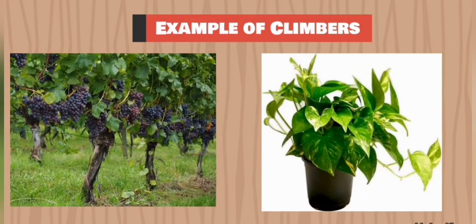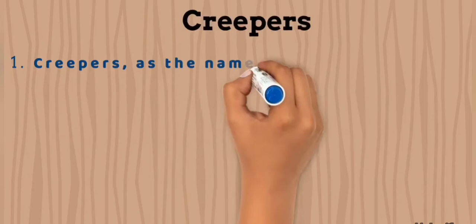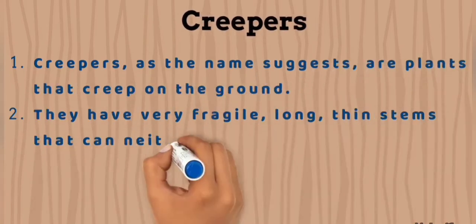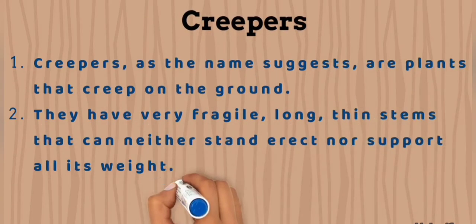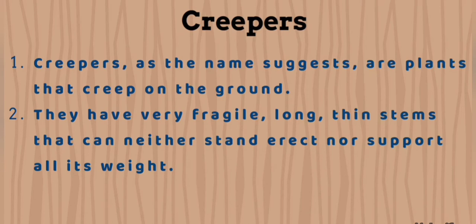Some examples of climbers are grapevine and money plant. The final type of plant is creepers. As the name suggests, creepers are plants that creep on the ground. They have very fragile, long, thin stems that can neither stand erect nor support all their weight.